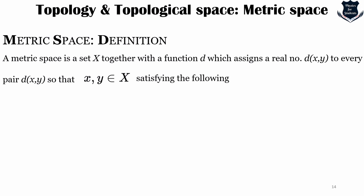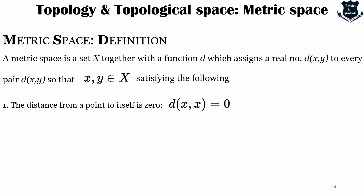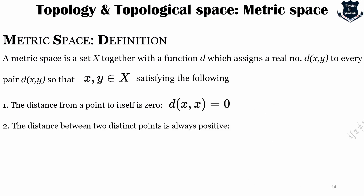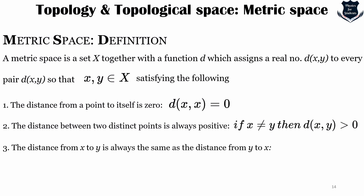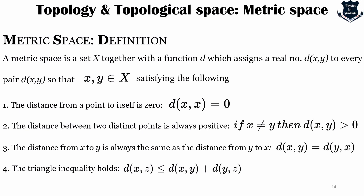The definition of metric space: it is a set together with a notion of distance between elements called points. The distance is measured by a function called a metric or distance function. Metric spaces are the most general setting for studying many of the concepts of mathematical analysis and geometry. If a metric space X is given together with a function d, which assigns a real number d(x,y) for elements x and y in X, it must satisfy: (1) distance from a point to itself is zero, (2) distance between two distinct points is always positive, (3) distance from x to y equals distance from y to x, and (4) it obeys the triangle inequality.